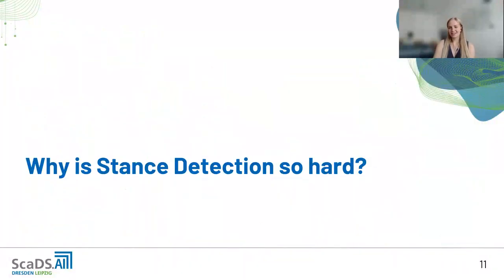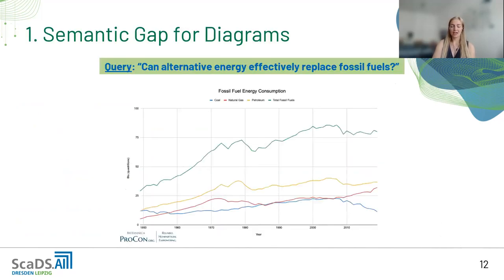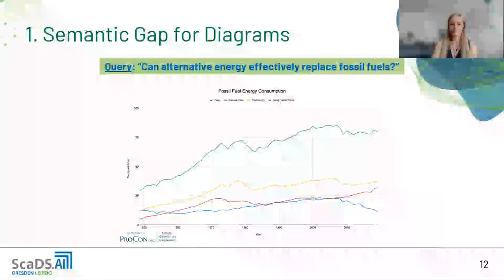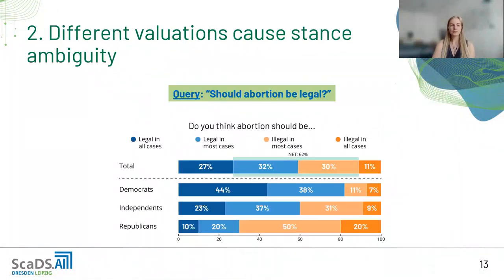After these unsatisfactory results, we asked ourselves why stance detection is so hard and identified nine key challenges. The first is the semantic gap for diagrams: for humans, diagrams are a good way to show information via lines, circles, or bars, but for a computer it is very hard to interpret these geometric shapes and gather information from them.